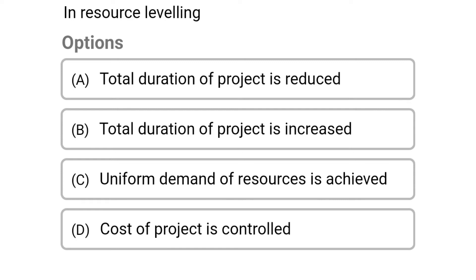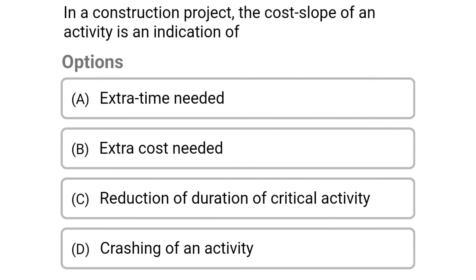Next question: in resource leveling — option A: the total duration of the project is reduced, option B: the total duration of the project is increased, option C: uniform demand of resources is achieved, option D: cost of project is controlled. The correct answer is option B: total duration of the project is increased.